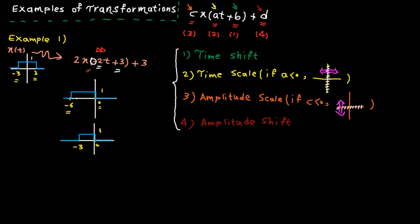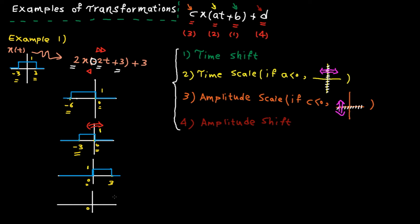The negative time scaling factor means we play the signal from the end to the beginning, so we need to reflect the signal with respect to the y-axis. Minus three goes to three, and zero stays at zero. Here we go.